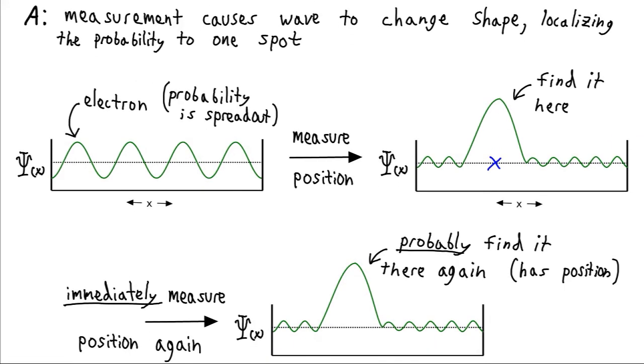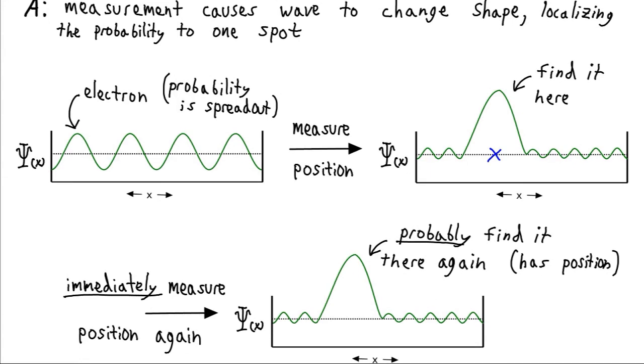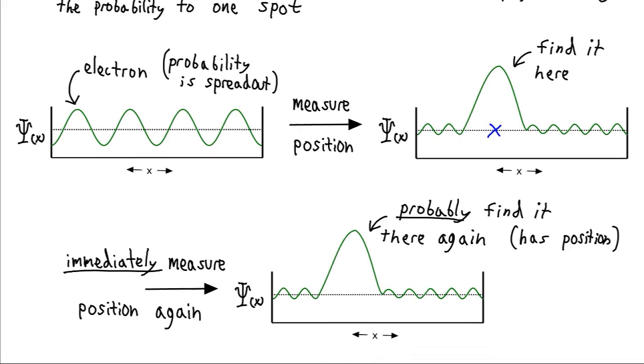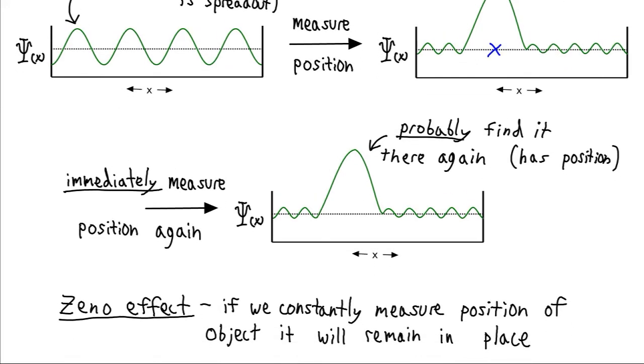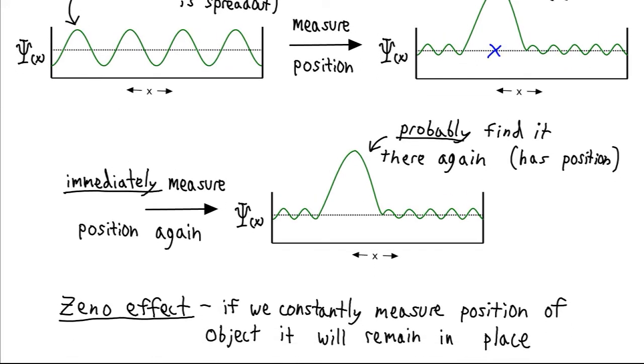Well every time we measure it, we localize its probability. So as long as we're very fast in measuring it, we're going to get the same wave function. Maybe it will be even larger here. And so what that does, it kind of locks the electron in place. This is called the Zeno effect. It's a real effect.